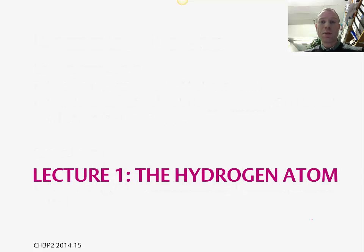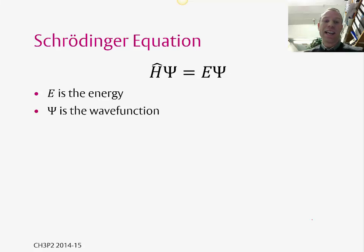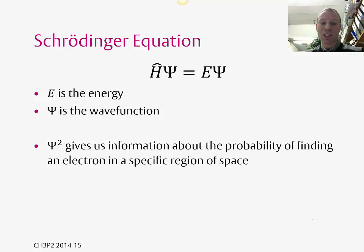You'll remember from my first year course about the Schrödinger equation, which has the form H psi equals E psi. So H is the Hamiltonian operator, E is the energy, and psi is the wave function. Often it's not the wave function that we're most interested in. It's the wave function squared, psi squared, which gives us information about the probability of finding an electron in a specific region of space. This is the Born interpretation of the wave function.